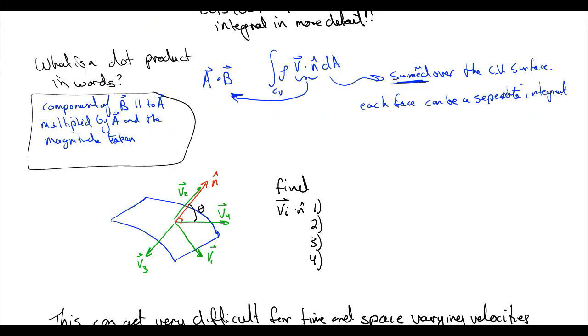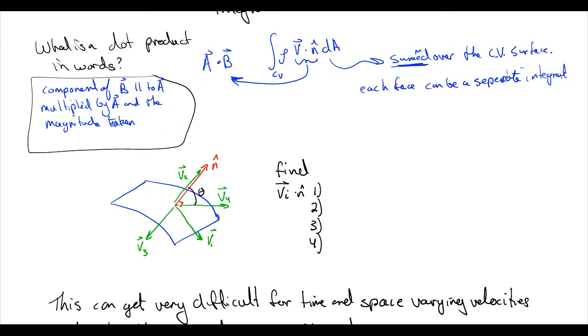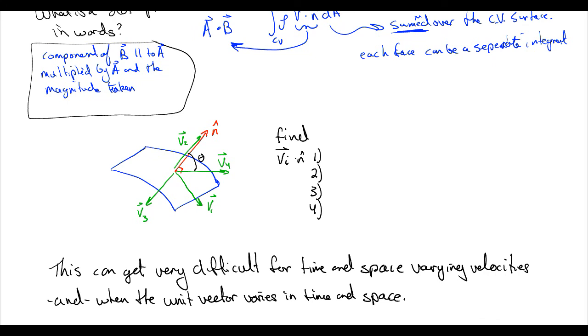So let's look at this really quick and practice our dot product before we start practicing our sums, our integrals. If we practice our dot product, our unit normal is pointed in this direction in red, and then we have V2, which is parallel to it, V4, which is different by some amount theta, V1, which is perpendicular to it, and V3, which is in the opposite direction. So if we look, VI dot N hat, well, VI is perpendicular to N hat, so we know that the dot product is equal to zero for that one. For two, V2, they're parallel. So it's equal to the magnitude of V2.